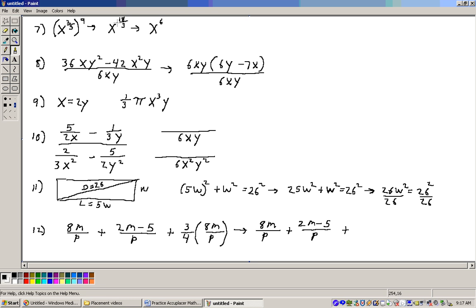So it's x to the 18/3, 18 divided by 3 is 6, x to the 6th. Problem number 8 is to simplify 36xy² minus 42x²y over 6xy.